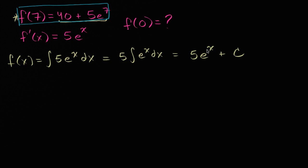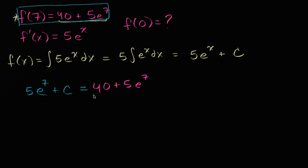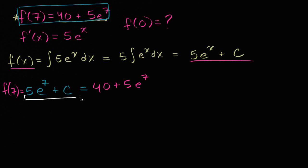We know that f of seven — when x is equal to seven — this expression is going to evaluate to 40 plus 5e to the seventh. So 5e to the seventh plus c is equal to 40 plus 5e to the seventh. All I did is replace x with seven to find f of seven, and we know that f of seven is also equal to that — they gave us that information.